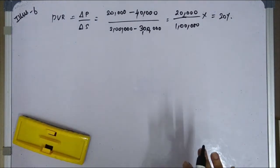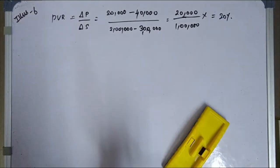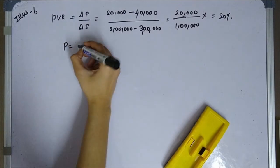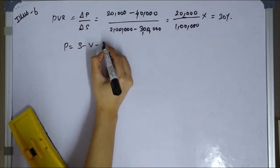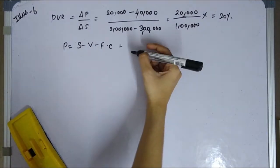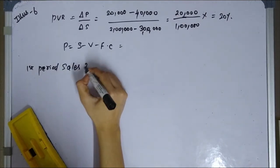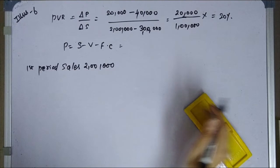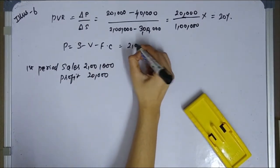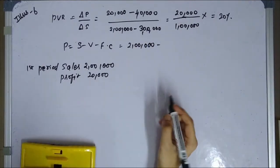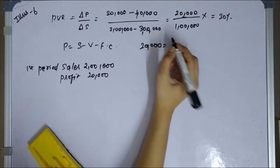Next step, we will find the fixed costs. Using the first period data: sales is 2 lakhs and profit is 20,000. The formula is: profit equals sales minus variable cost minus fixed cost. With the PV ratio being 20 percent, the variable cost ratio is 80 percent.